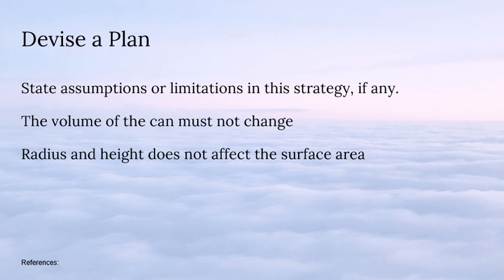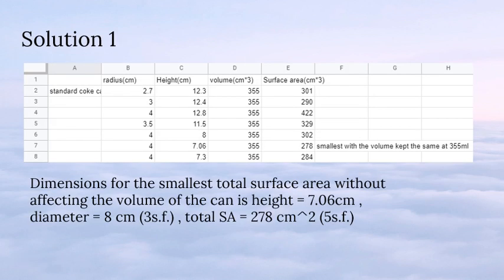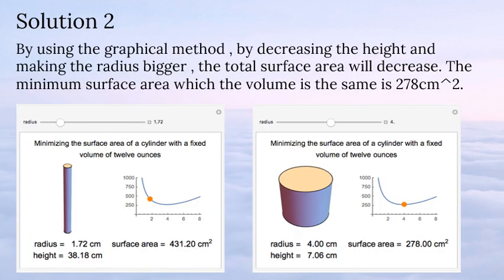I'm Vera. We assume that the volume of the can must not change and that the radius and height adjustments must not negatively affect the surface area. Out of the two solutions, we chose Solution 1 instead of Solution 2 because it is easier to understand. Using this table, you can find that the dimensions of the can with the smaller surface area have a height of 7.06 and a diameter of 8. We decrease the height and make the radius bigger, and we found that the minimum surface area is 278.06.